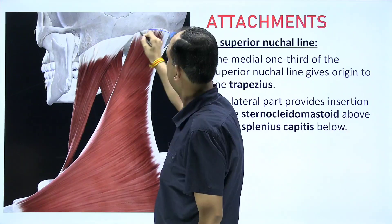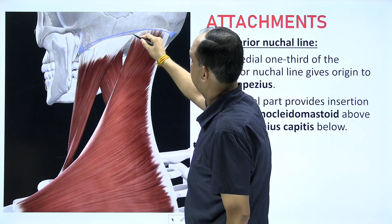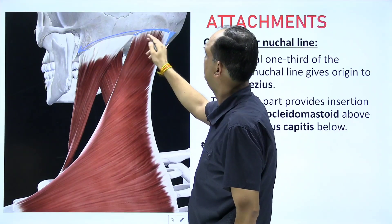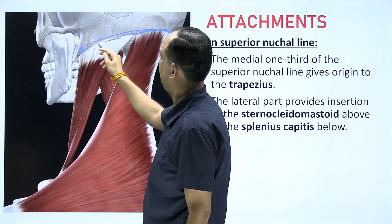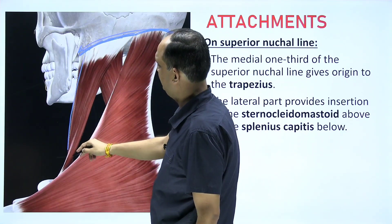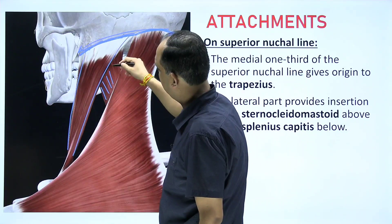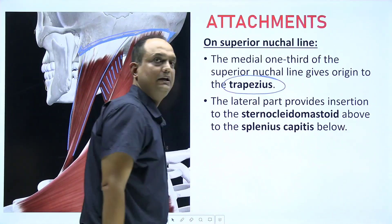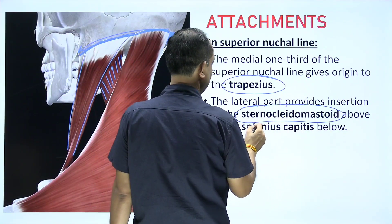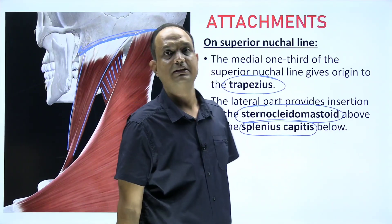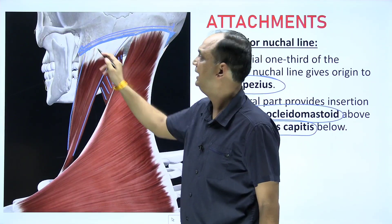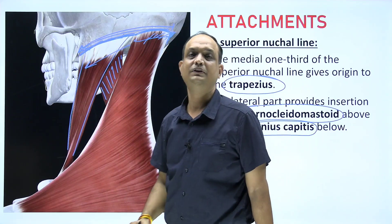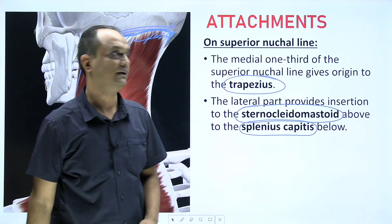On the superior nuchal line, going laterally you will find three muscles. Trapezius arises from the external occipital protuberance in the midline and from the medial part of the superior nuchal line. The lateral part of the superior nuchal line, up to the mastoid process, gives attachment to sternocleidomastoid superficially, and deep to it is splenius capitis. So the superior nuchal line is divided into medial — trapezius — and lateral — sternocleidomastoid superficially and splenius capitis deeply.